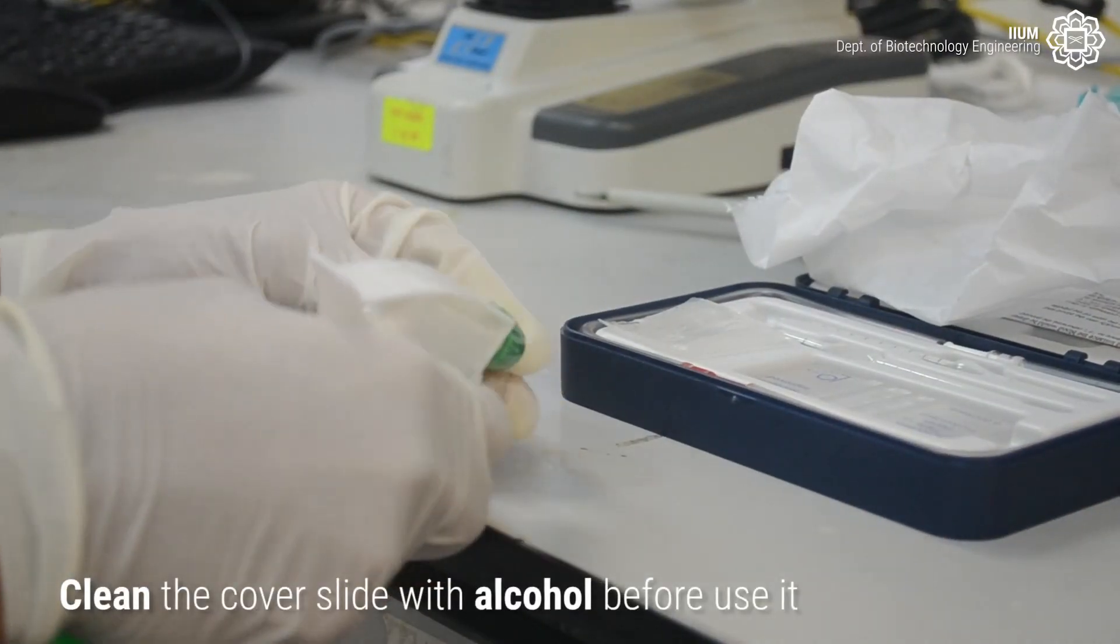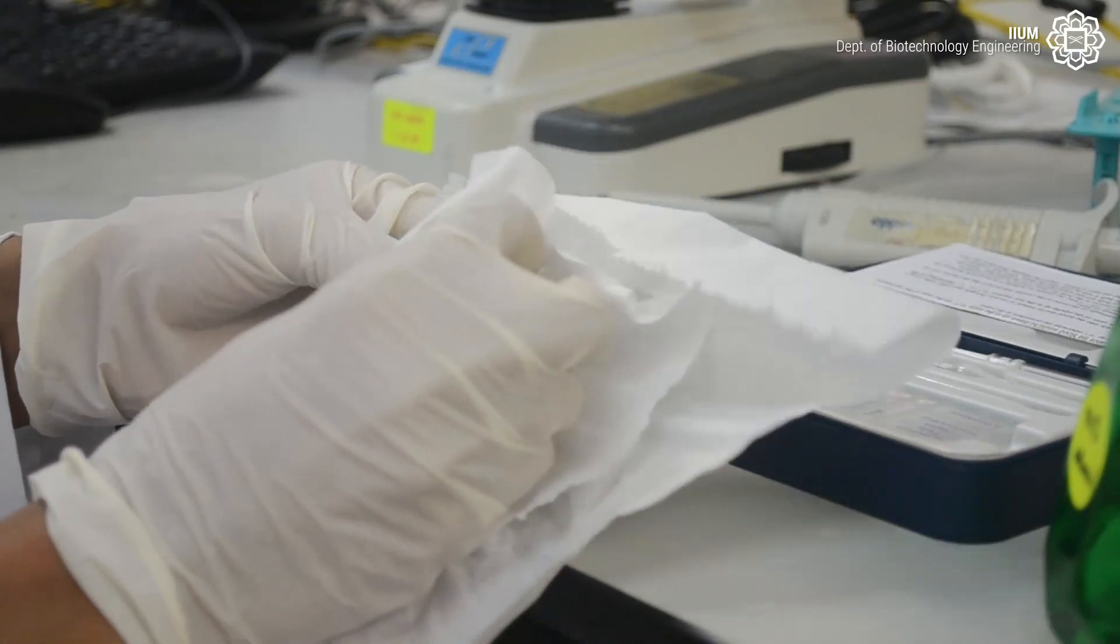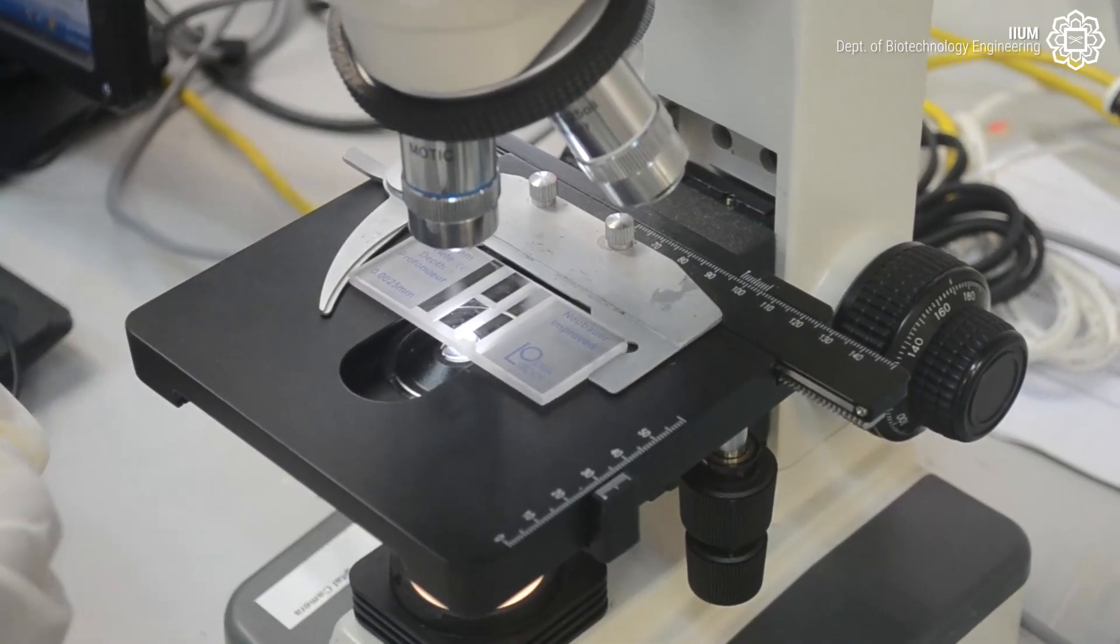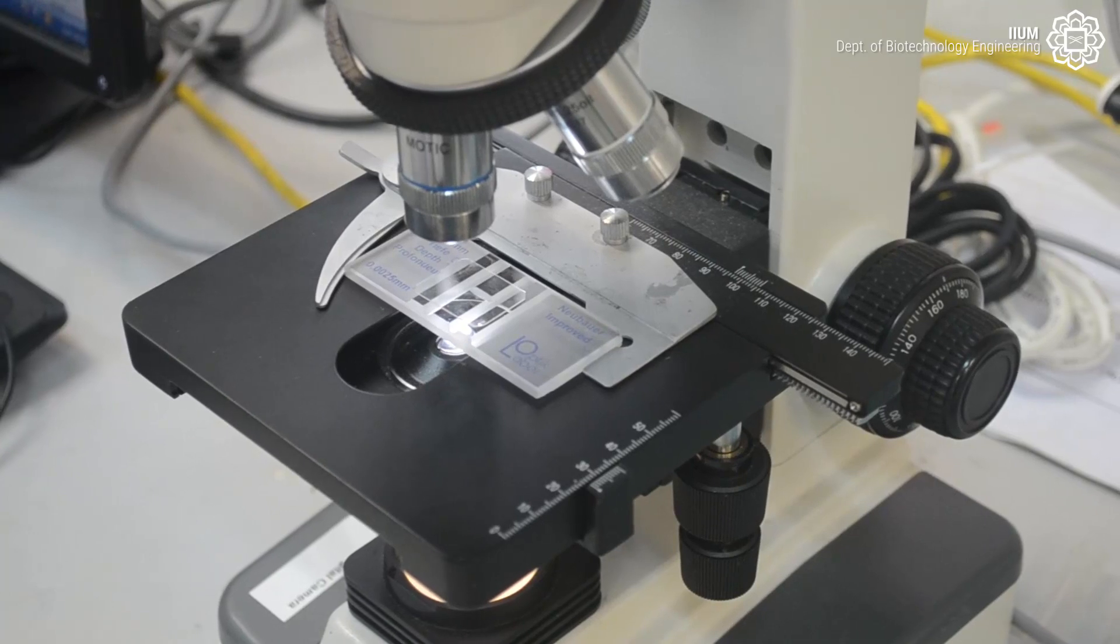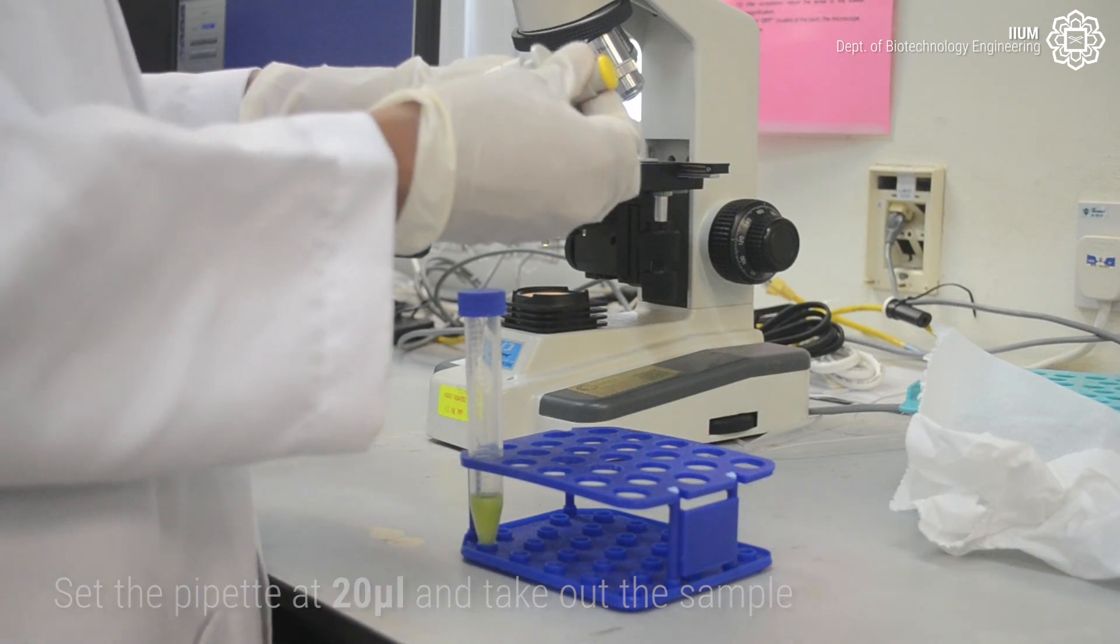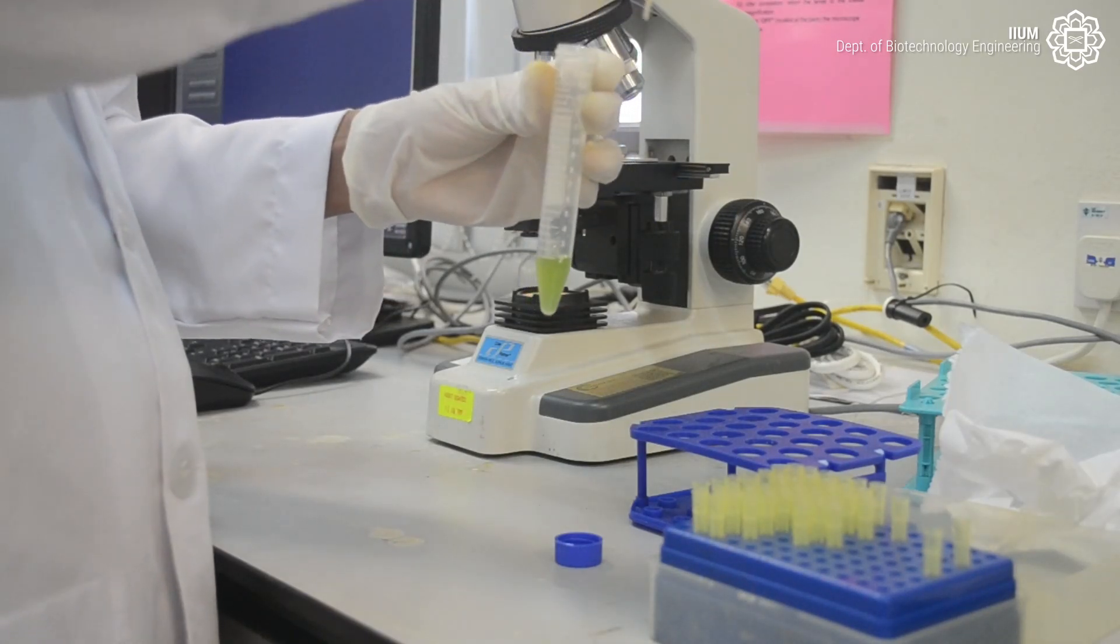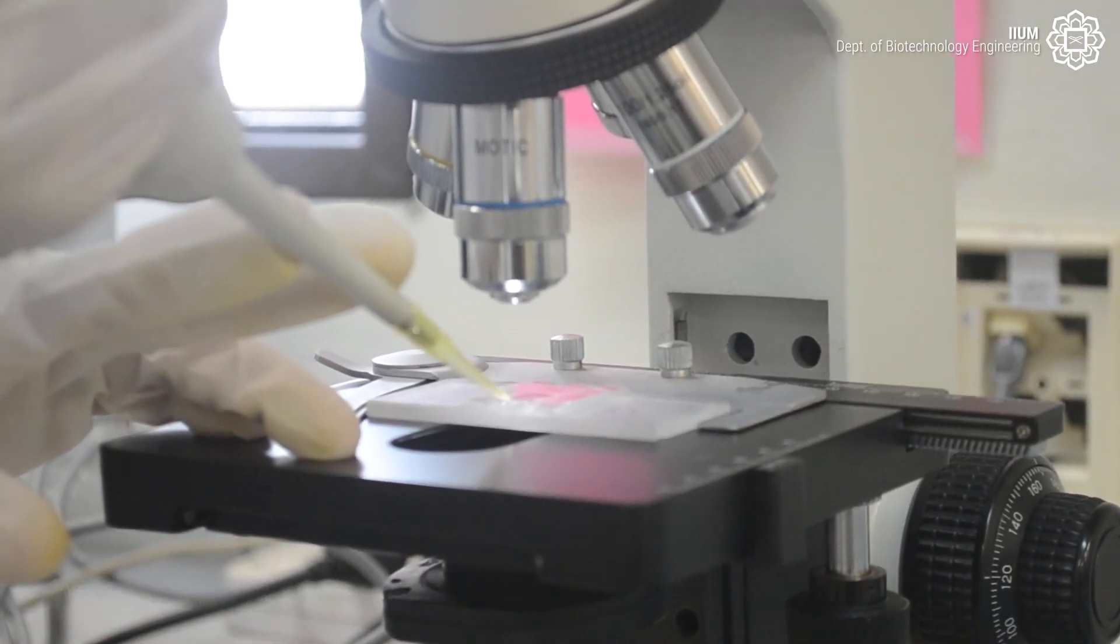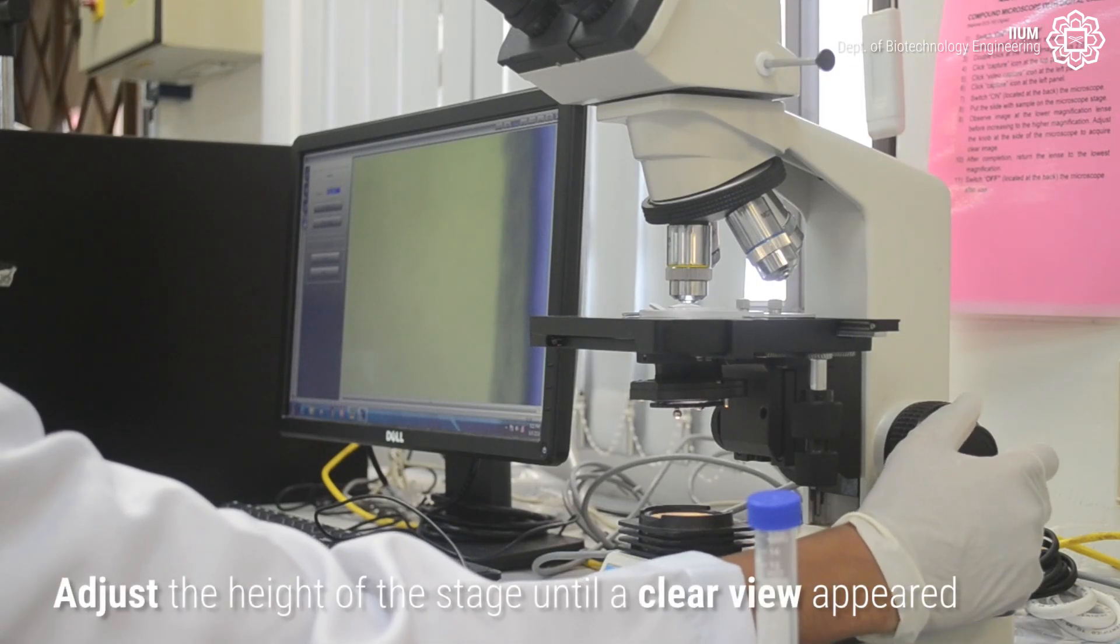Clean the cover slider with alcohol before using it. Put the hemocytometer and cover slide on the stage. Set the pipette at 20 µL and take out the sample. And put the sample on the hemocytometer. Adjust the height of the stage until a clear view appeared.